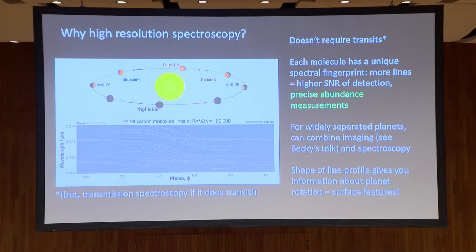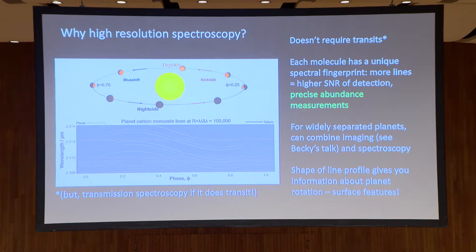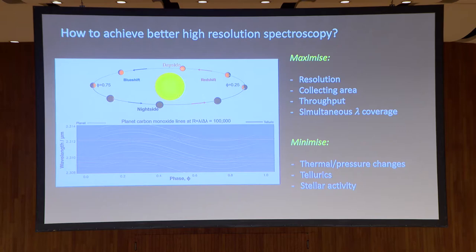What are the science cases for high resolution spectroscopy of exoplanets? With radial velocity we look at the star moving. With high resolution spectroscopy you can disentangle from the spectrum the planet moving back and forth. This is cool because it doesn't require transits. You don't actually need transits to characterize the atmosphere of the planet — which really opens up the number of nearby planets where we can characterize the atmosphere.